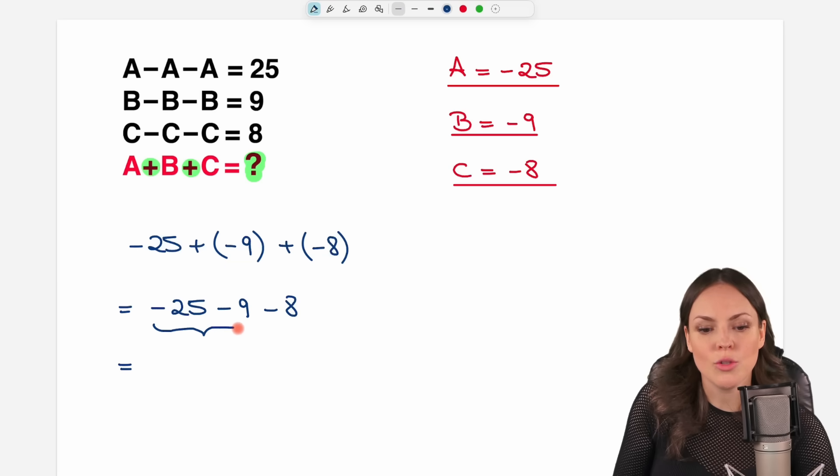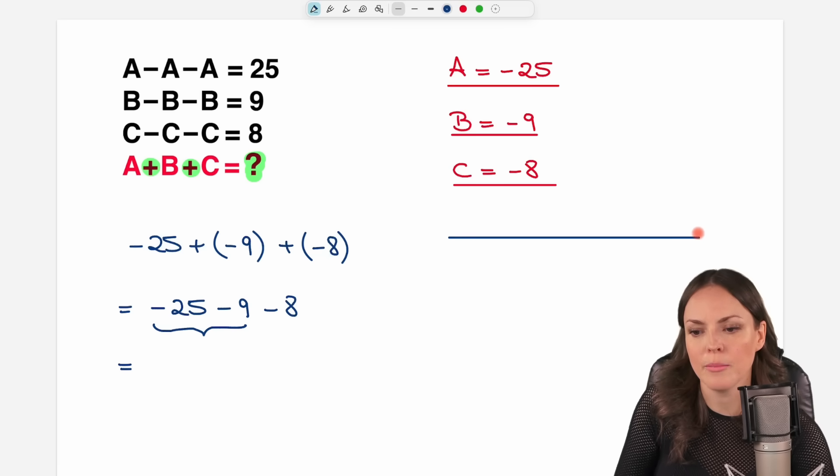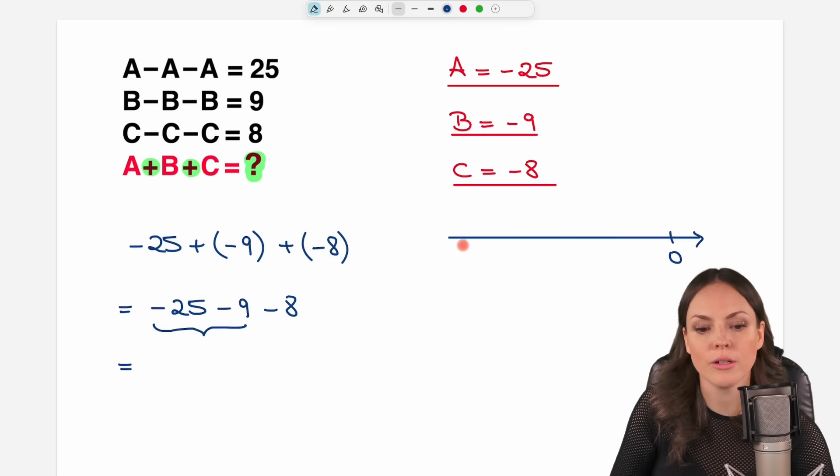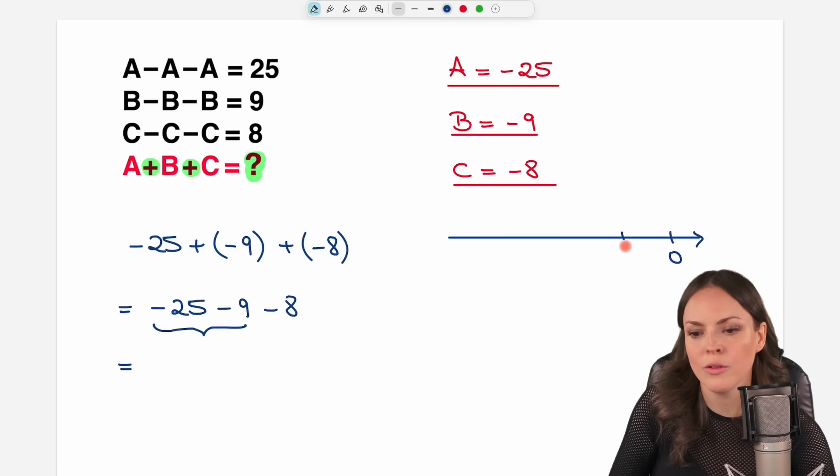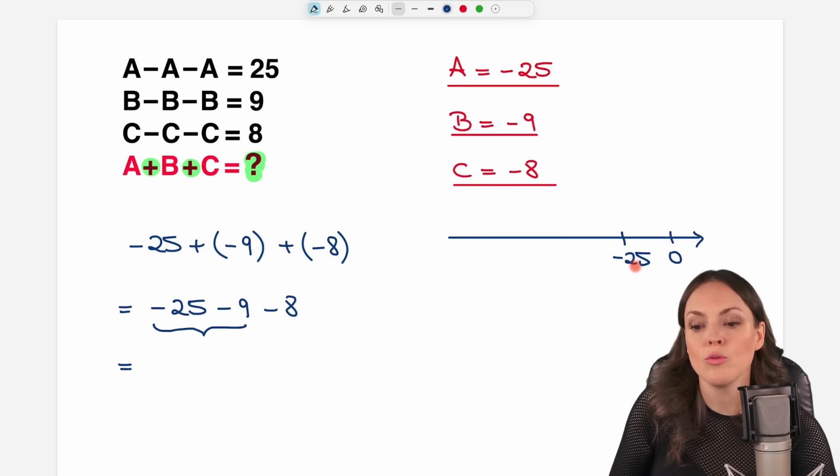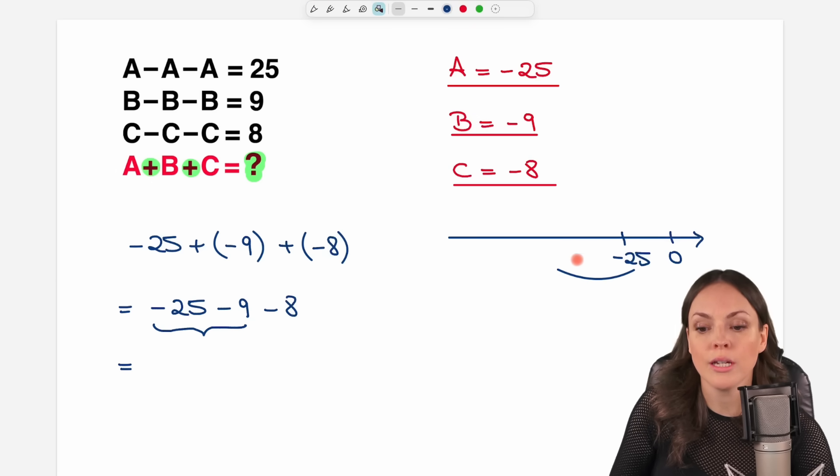Let's start with these two here. Negative 25 minus 9. We can do this on a number line where we are below 0 here. We start at negative 25 and we want to subtract 9. To subtract, we go into the negative area even more.